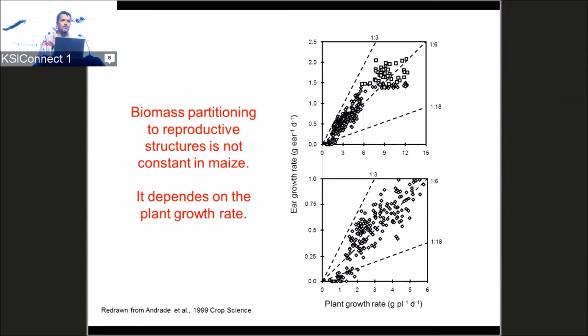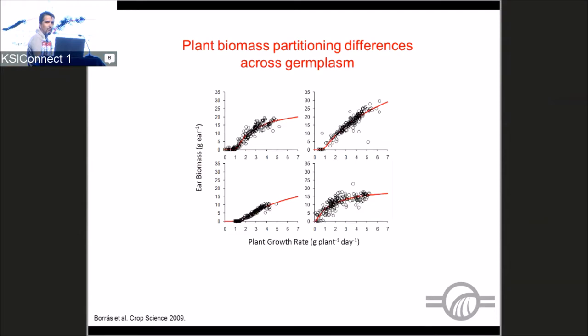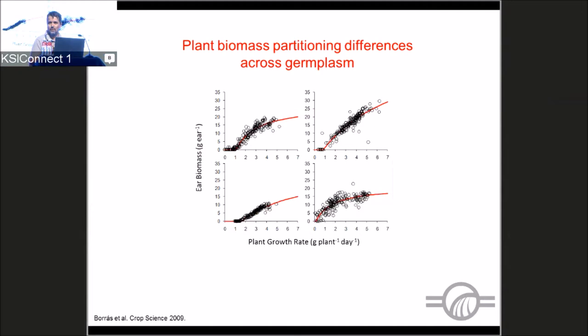Phenotypes differ greatly in this partitioning trait. These are inbred data — here is biomass at the end of the flowering period versus how much plants are growing. The nature of the relationship may be linear, but the parameters differ dramatically between genotypes. One genotype with plants growing around 1 gram per day allocates some biomass to the ear; another genotype at the same growth rate allocates absolutely nothing to the ear.